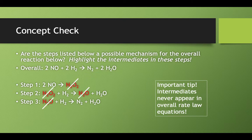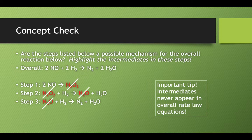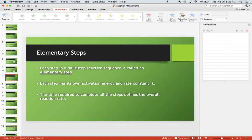And an important tip, your intermediates, those things highlighted in red where they get made in one step and immediately get used up in a future step. You'll never see those appear in overall rate law equations.